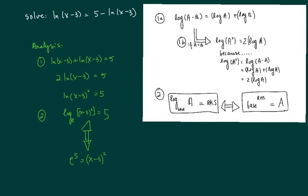e to the 5 is just a number and x minus 3, that I can handle. If I take a square root of this, I can solve for x. Once again, I'm solving for x so I need to get x by itself.